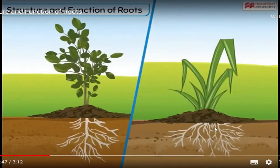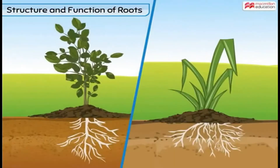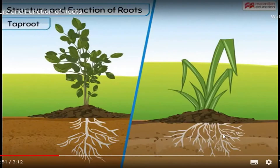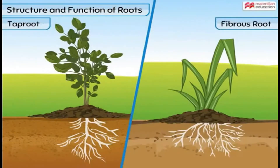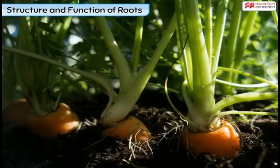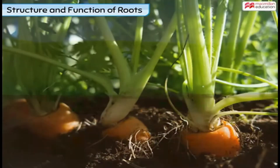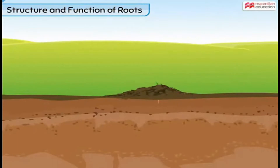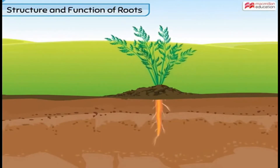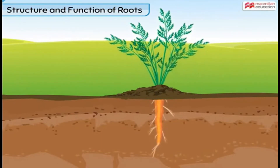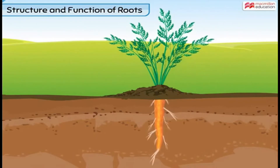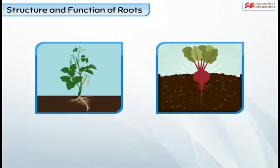There are two main types of roots seen in plants. Some plants have tap roots, while some have fibrous roots. The carrot plant is an example of a tap root. A tap root forms when one main root grows from the base of the stem and many other smaller roots grow from this main root. This main root keeps growing downwards and goes deeper into the soil. Other plants that have tap roots are bean and beetroot.